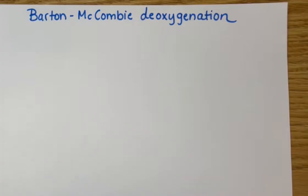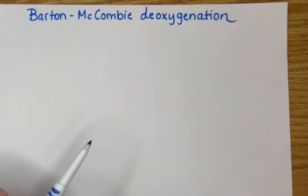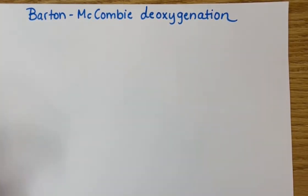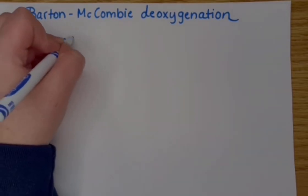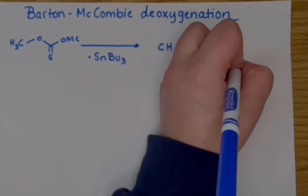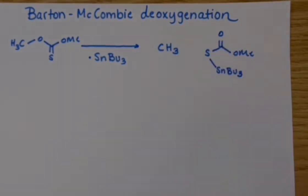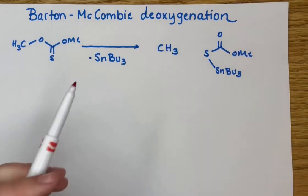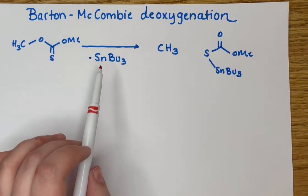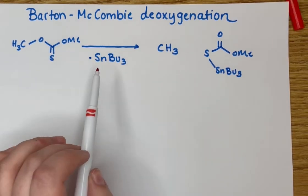The next reaction we are going to talk about is the Barton-McCombie deoxygenation reaction, and it is a little different from the decarboxylation reaction because we are deoxygenating rather than decarboxylating. Here we have the same tributyltin reducing agent as we do in the decarboxylation reaction.